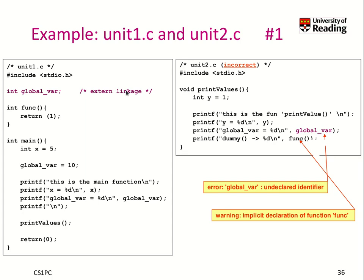Here we have an example that makes good use of what we just learned and shows you that this is relevant. We have two compilation units: unit1.c, which is on the left side, and unit2.c on the right side.